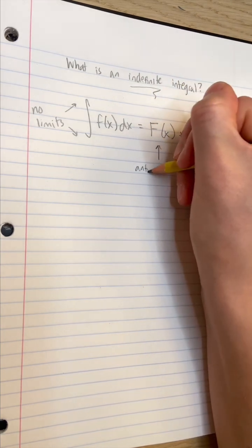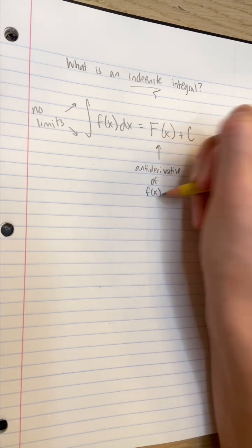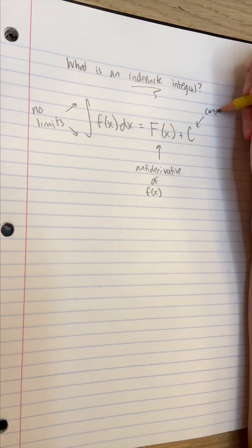This integral symbol tells the reader to find the general form antiderivative of the function next to it. This idea all comes back to the second fundamental theorem of calculus.